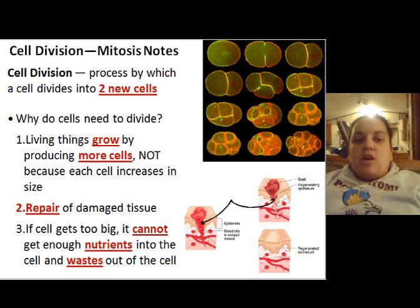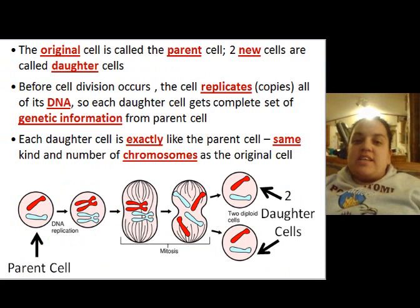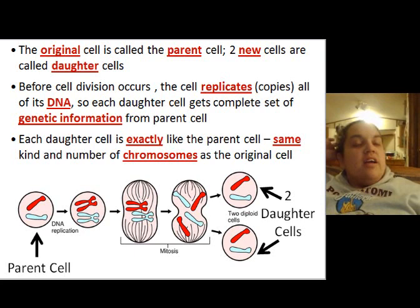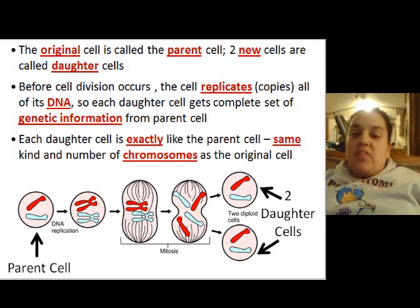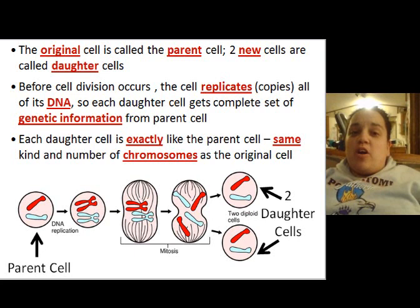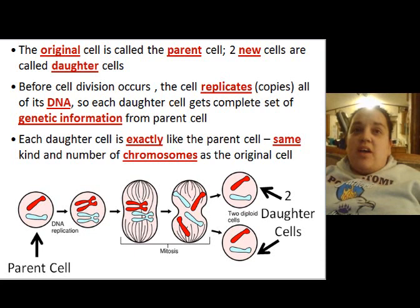There needs to be other cells to replace these cells. The original cell is called the parent cell, and the two new cells are called the daughter cells. The cell has a lot of different components within it, and one of those components is the DNA. Before cell division occurs, it has to replicate a copy of all the DNA so each daughter can get a complete set of genetic information. It's really remarkable that cells are able to do this, and the amount of time it takes for the cell to replicate is also pretty amazing.